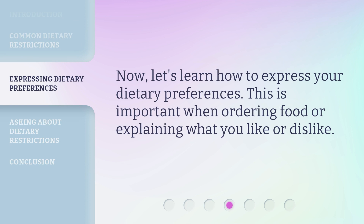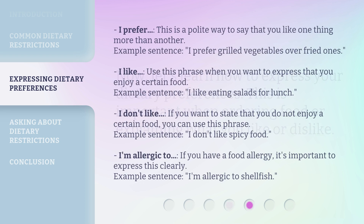Now, let's learn how to express your dietary preferences. This is important when ordering food or explaining what you like or dislike. 'I prefer' — this is a polite way to say that you like one thing more than another. Example sentence: I prefer grilled vegetables over fried ones.